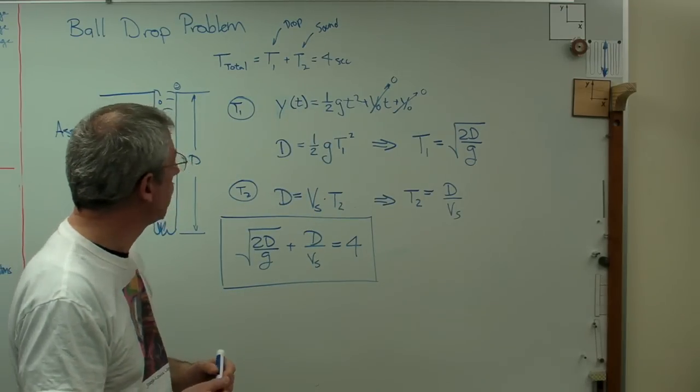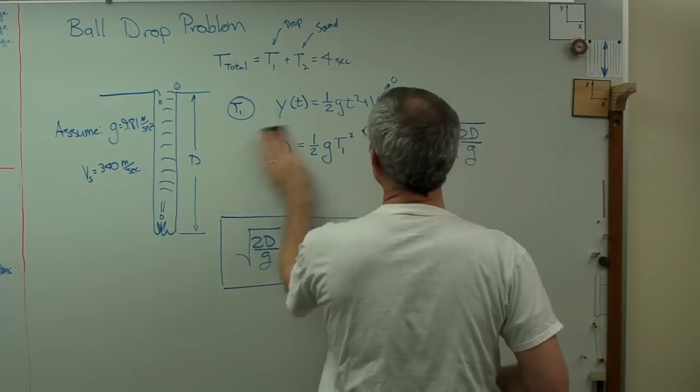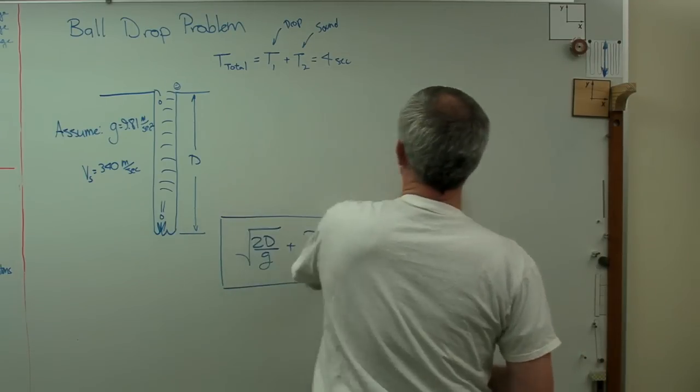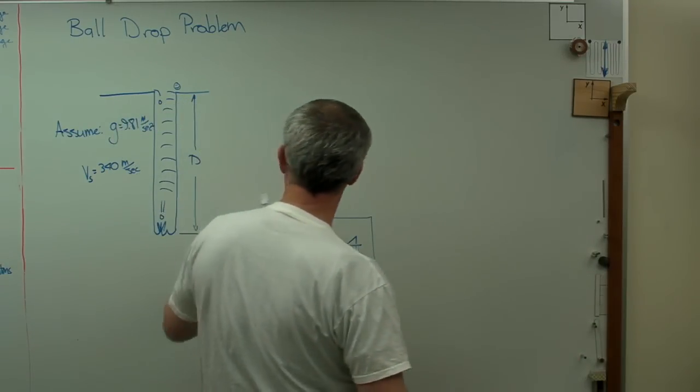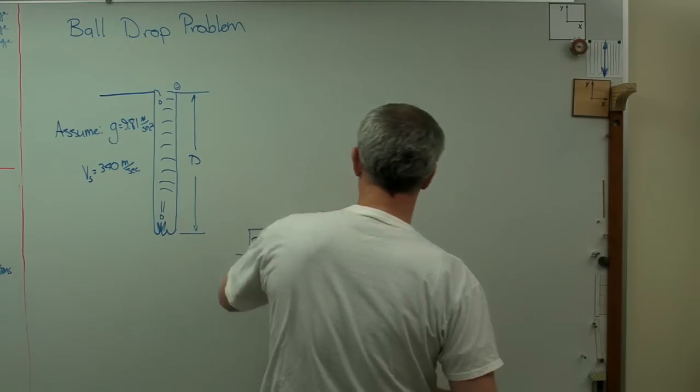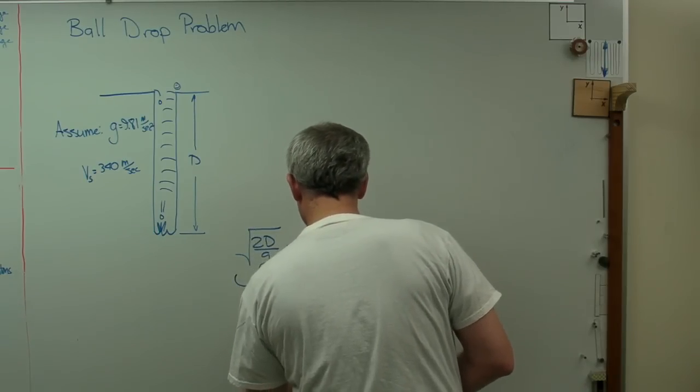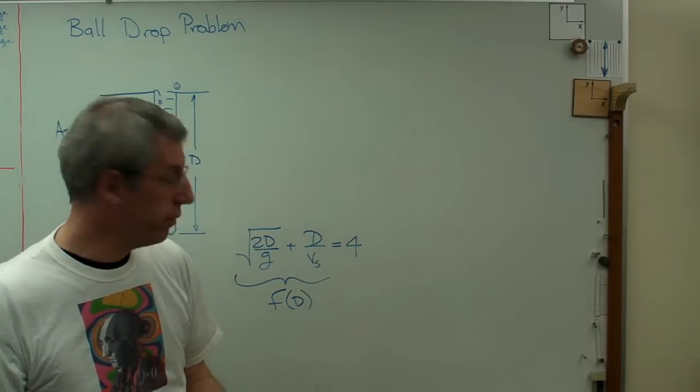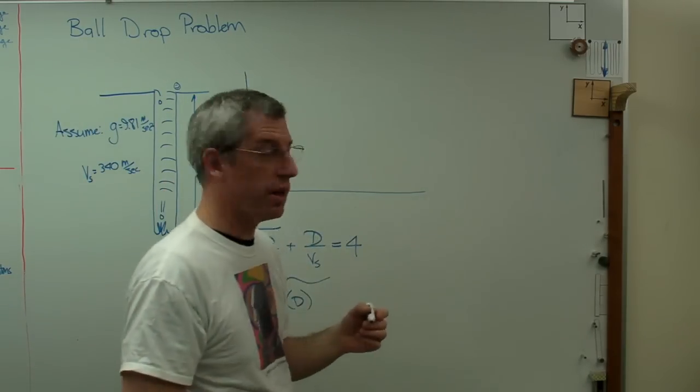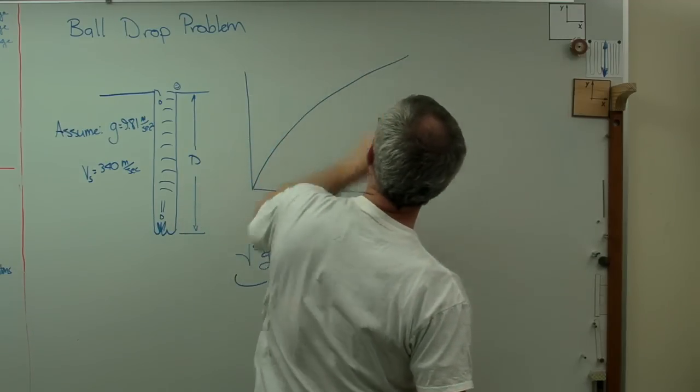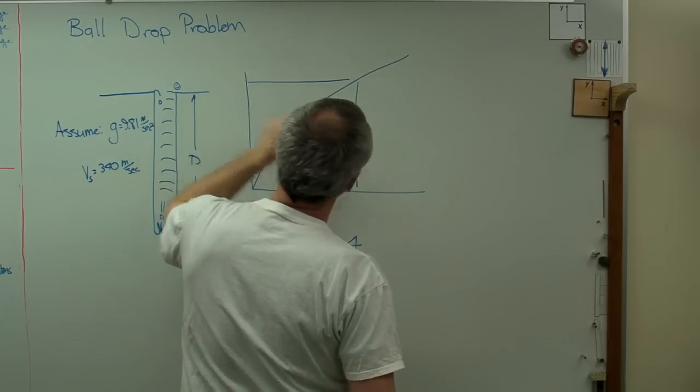How are we going to solve this? There's a lot of ways to do it. I can simply plot the left side of this equation. I'm going to call this a function of d. When that function equals 4, I'll know what d is. If I plot it, it looks kind of like that.